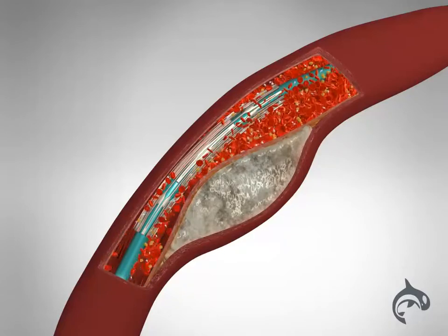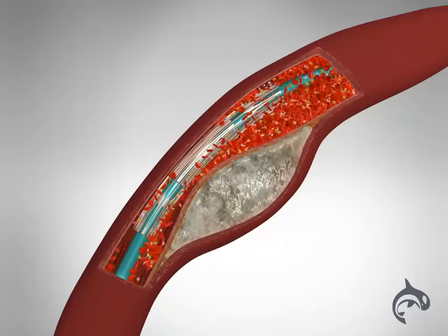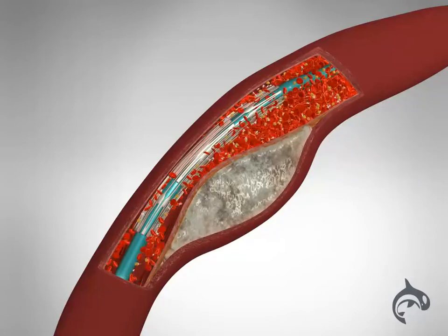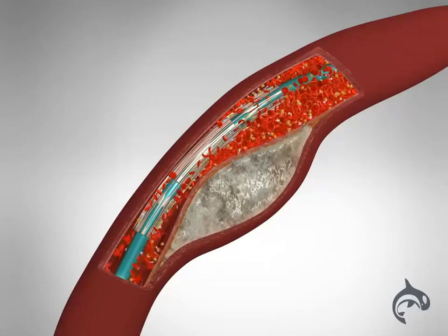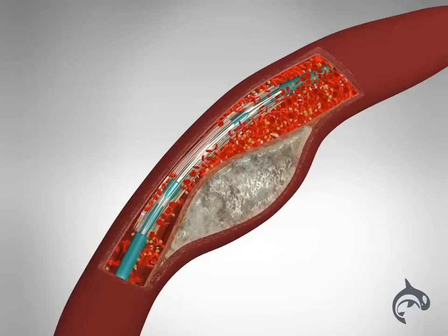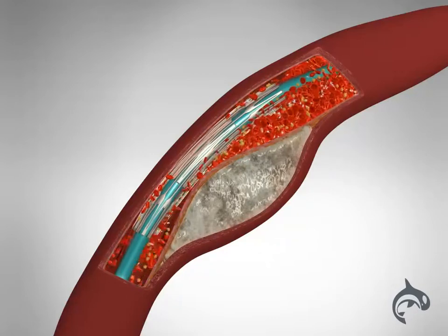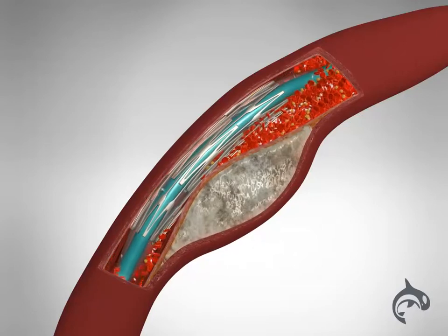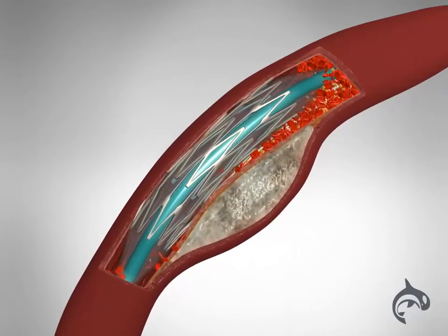Wrapped around the balloon is a tiny wire mesh cylinder called a stent. Once the balloon is in place, the doctor inflates it. As the balloon expands, the stent around it expands too. The balloon and stent squash the plaque against the walls of the artery, making more room for the blood to flow.